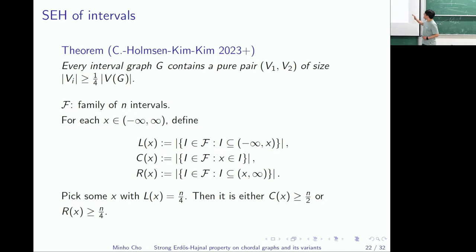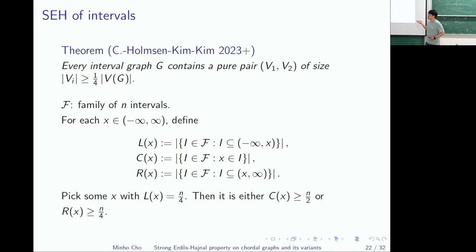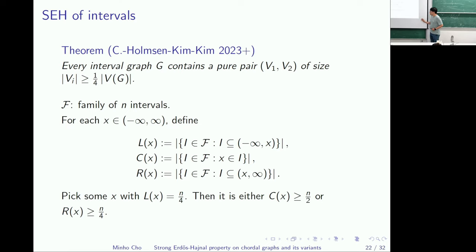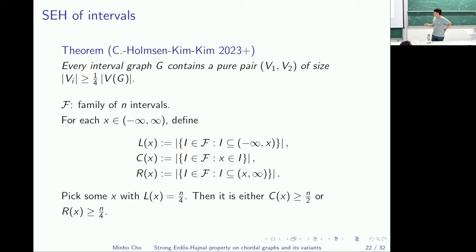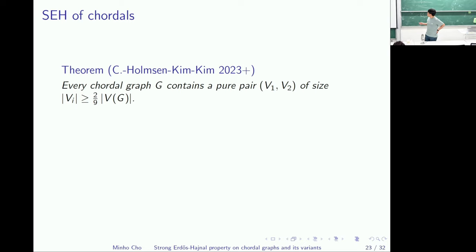You can understand the proof this way: if I don't have a pure pair of the desired size, then each point on the real line does not cover many intervals, so the rest of members are split in a balanced way at some good point. This spirit is the starting point for the result on chordal graphs.